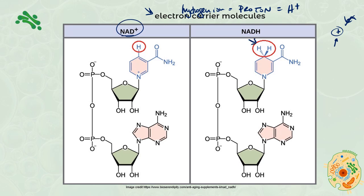NAD+ molecules can grab onto some hydrogens — you can see how this molecule has an extra hydrogen, and there are also some electrons in the bond. These electron carrier molecules, which are also proton carrier molecules, can simply shuffle these electrons and protons around the mitochondria. We're going to talk about how important that is when we get to electron transport chain functions. NAD can gain a hydrogen and some electrons, and then lose that hydrogen and those electrons to go back to the NAD+ version.